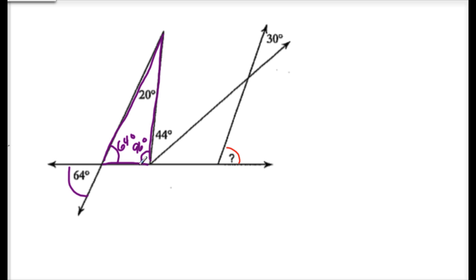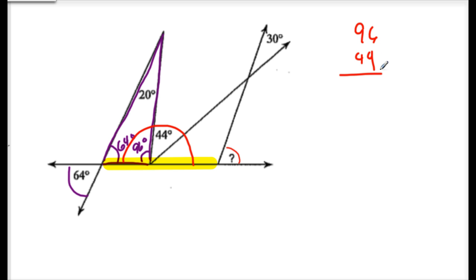Now take 96 and add it to 44 to get 140. Then subtract from 180, because that's a straight angle — these three angles must equal 180 degrees. So I have 96 and 44, which equals 140 degrees, meaning this angle here must be 40 degrees.